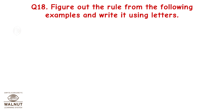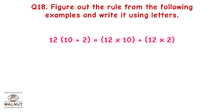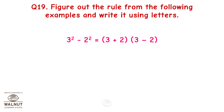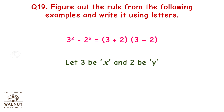Question 18: Figure out the rule from the following examples and write it using letters. 12 into (10 plus 2) is equal to 12 into 10 plus 12 into 2. Let 12 be a, 10 be b, and 2 be c. Hence we get a into (b plus c) is equal to a into b plus a into c. Question 19: Figure out the rule from the following examples and write it using letters. 3 squared minus 2 squared is equal to (3 plus 2) into (3 minus 2). Let 3 be x and 2 be y. Therefore we get x squared minus y squared is equal to (x plus y) into (x minus y).